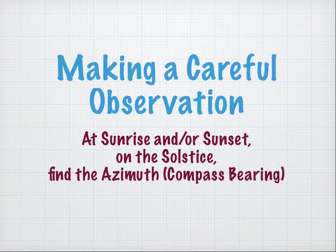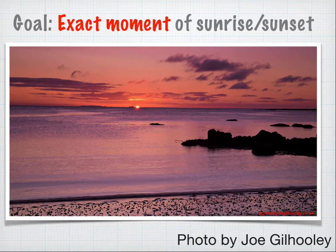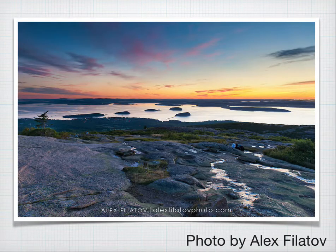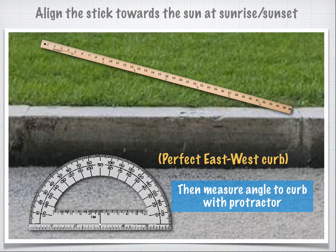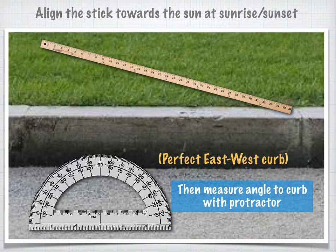Making a careful observation. At the time of sunrise and sunset on the solstice, you want to find the exact azimuth or compass bearing of sunrise or sunset — the exact moment of sunrise or sunset. Some photos won't clearly show the sun, so you can't pin the azimuth. You want a good view of the horizon. When you see the sunrise or sunset, try to angle your yardstick so that it is pointing exactly at the sun. Then you can use your protractor against the curb to measure the angle. This is why you want an east-west curb, so you can measure the angle very easily.